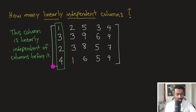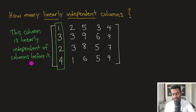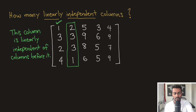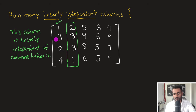We're going to take the first column and determine if it is linearly independent of columns that come before it. This is the first column — there are no other columns before it, so it is linearly independent. We'll put a checkmark here. The second column is also linearly independent of all the values in the columns that come before it — in this case, the first column. So we put a checkmark there too.